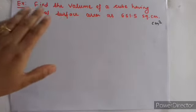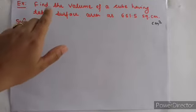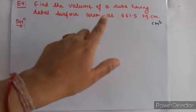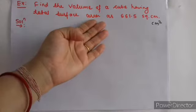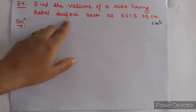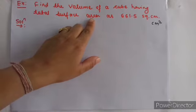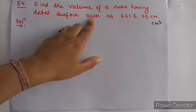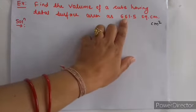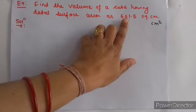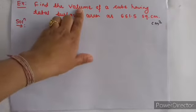तो सबसे पहले हमें जो find करना है उसका formula देखना चाहिए. क्या find करना है? Find the volume of a cube. So volume of a cube क्या होता है? Side का cube — यहने a³. तो उसके लिए side given होनी चाहिए. तो question में side given है या नहीं है? So given तो है total surface area — मतलब side तो नहीं है. तो क्या हम total surface area के formula का use करके side find कर सकते हैं? Total surface area हमें given है, यहने 6a² की यह value है. तो वहाँ से हम side find कर सकते हैं. एक बार side मिल गई तो हम volume find कर सकते हैं.